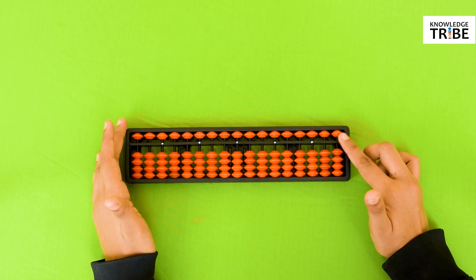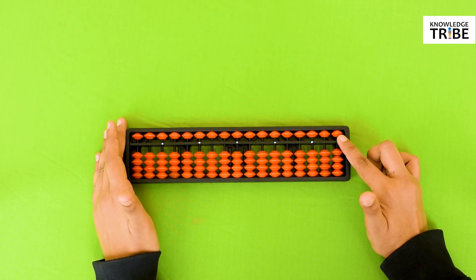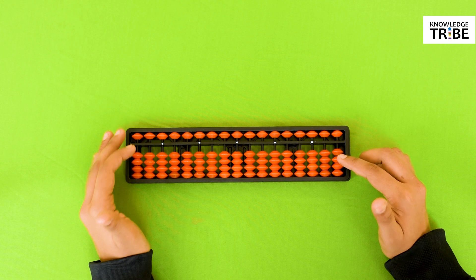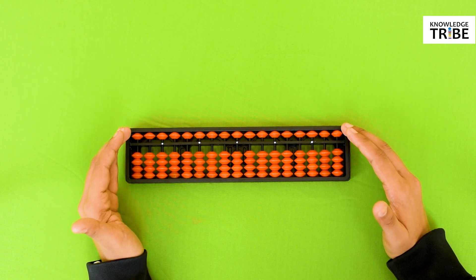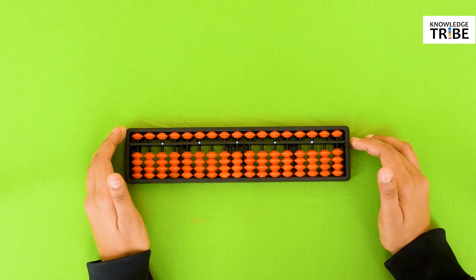Now let's revise. This is the center beam. The beads below the center beam are called the earthly beads and the beads above the center beam are called the heavenly beads. There you go. You got it.